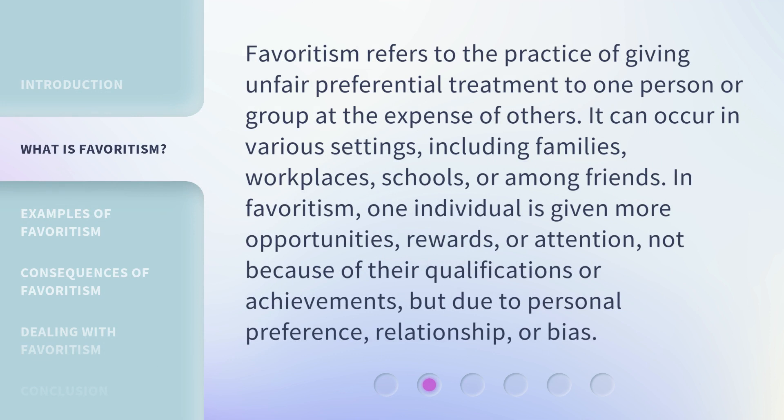Favoritism refers to the practice of giving unfair preferential treatment to one person or group at the expense of others. It can occur in various settings, including families, workplaces, schools, or among friends. In favoritism, one individual is given more opportunities, rewards, or attention — not because of their qualifications or achievements, but due to personal preference, relationship, or bias.